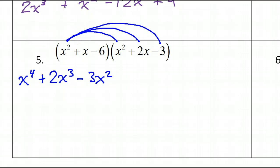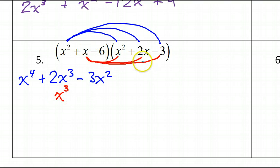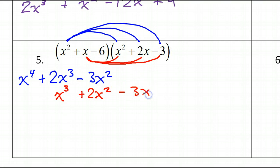Now we will distribute the next term, positive X — take this X and multiply it by each term. X times X squared is X to the third power, and I like to line that up with its like term. X times 2X is 2X squared — positive 2X squared. Then X times negative 3 is negative 3X.